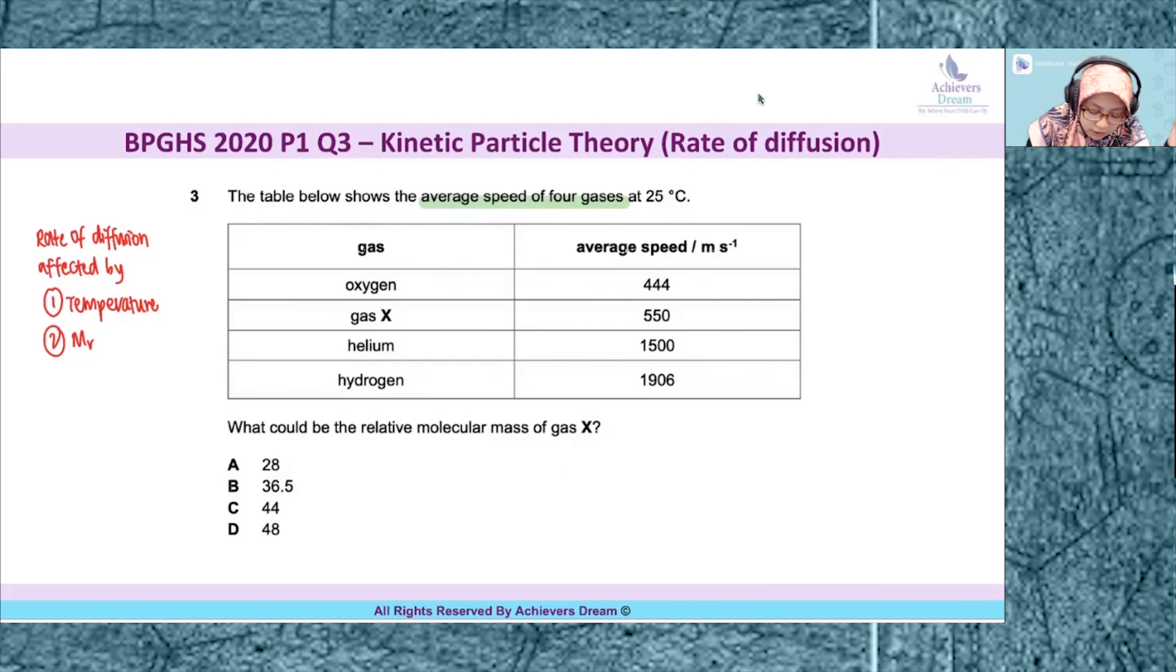The table below shows the average speed of four gases at 25 degrees Celsius. We have gas X here, this is the unknown, and they're asking you what could be the relative molecular mass of gas X.